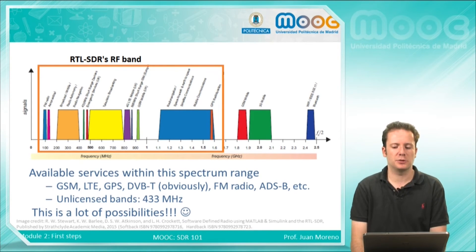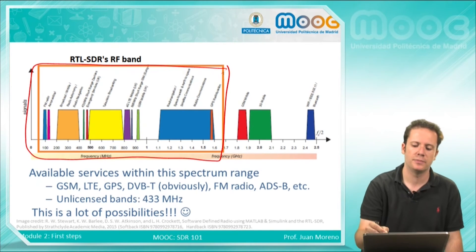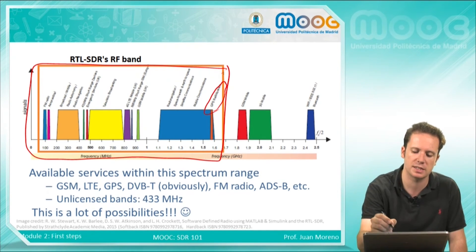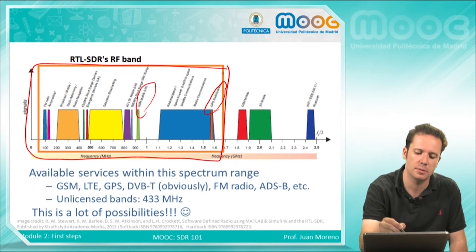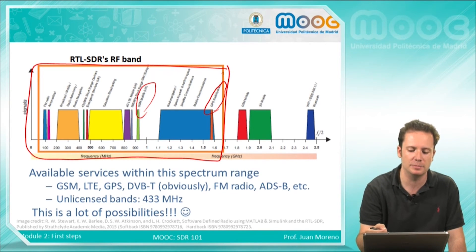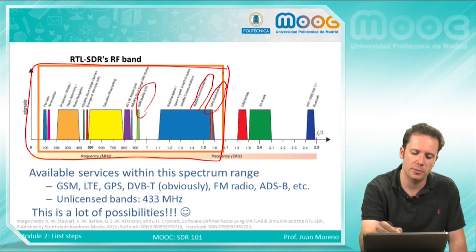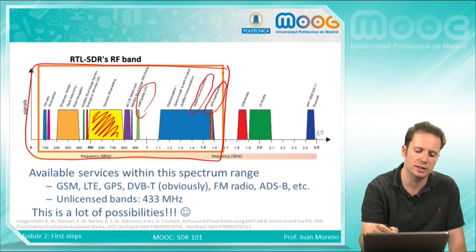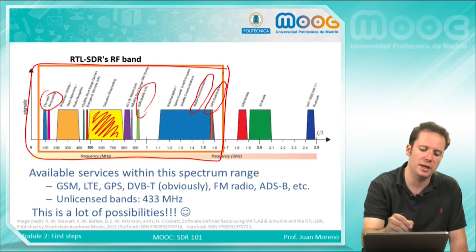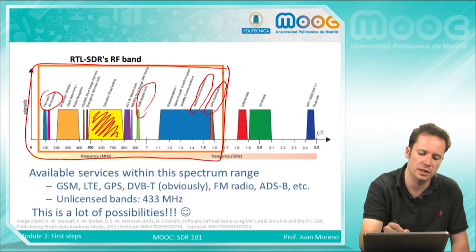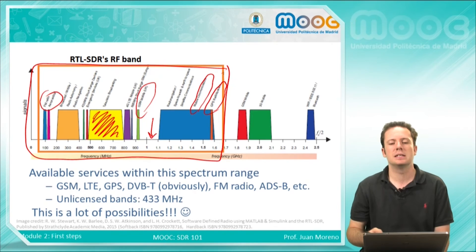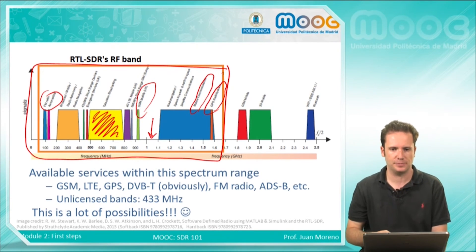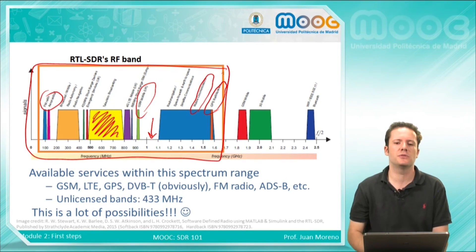Here is a depiction of the spectrum that the RTL-SDR is able to receive. For example, you have the GPS signals, the GSM mobile communication systems, public mobile signals, and another band dedicated to mobile communications. There is also a very wide band for TV broadcast, two bands for radio broadcast, and the ADS-B system which planes use to broadcast their position and IDs. There are a lot of services available within this frequency range.